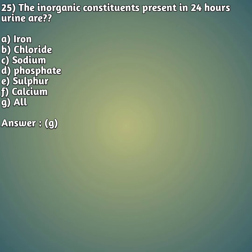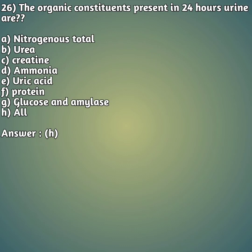Question 26: The organic constituents present in 24-hour urine — we just discussed inorganic constituents; now the organic ones. Option A: total nitrogenous, option B: urea, option C: creatine, option D: ammonia, option E: uric acid, option F: protein, option G: glucose and amylase, option H: all. The right answer is option H, all — these are all the organic constituents present in 24-hour urine.